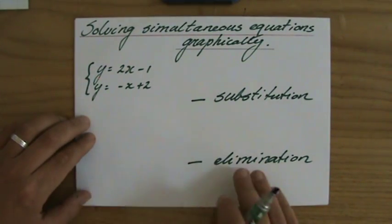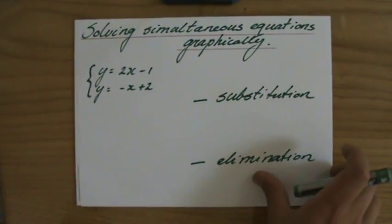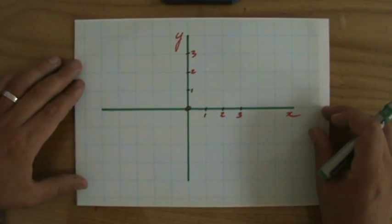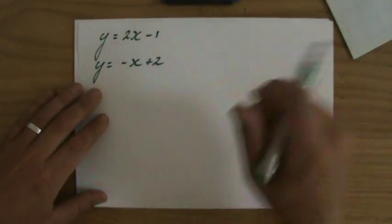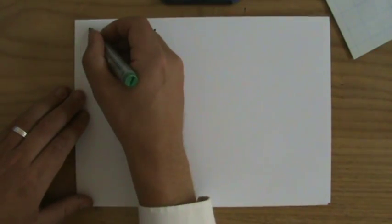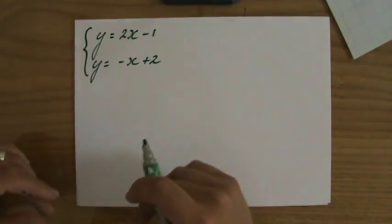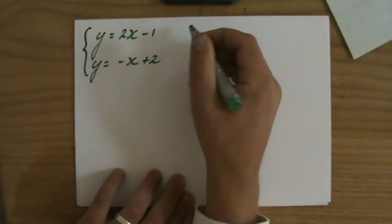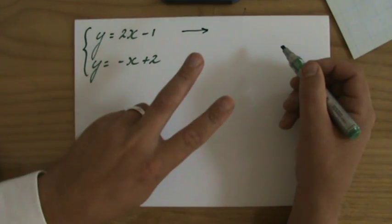Now we are going to do it graphically, and with graphically it means you have to graph it and then solve it. And that is nothing to be scared of. This is what is going on. I have written the two equations here again, I'll just put these accolades there too, so I am solving them at the same time, simultaneously.